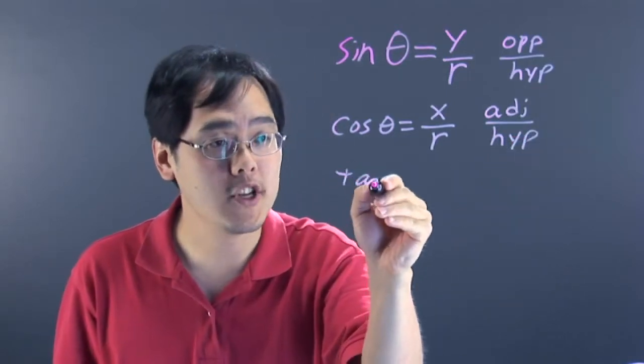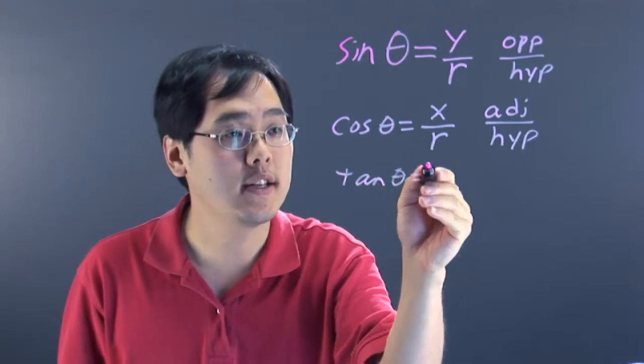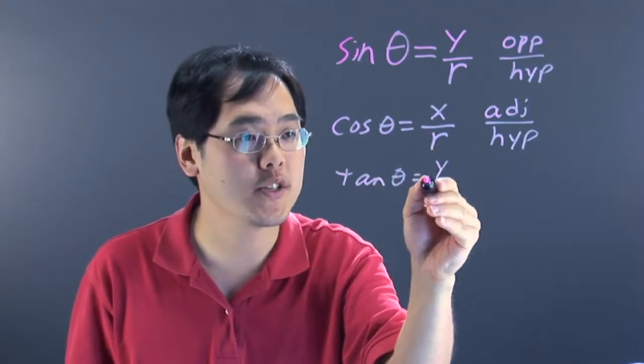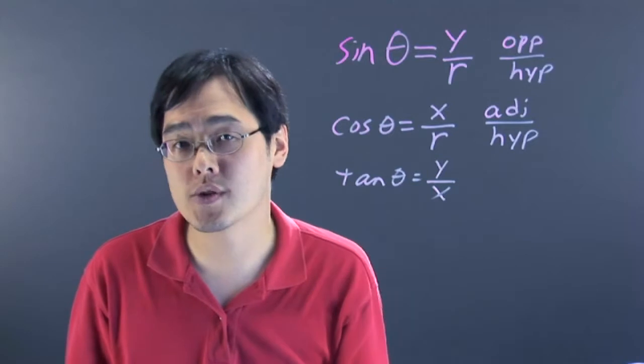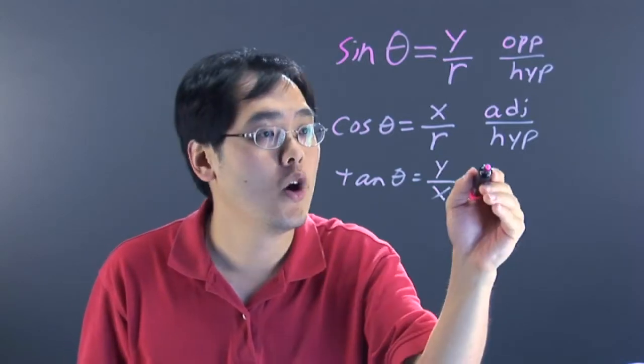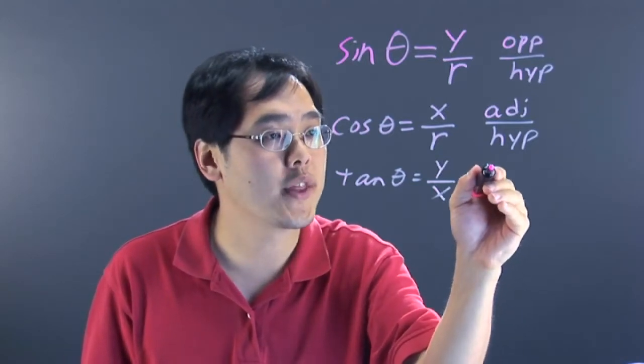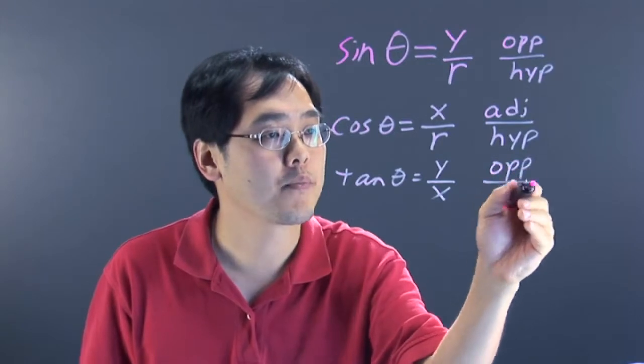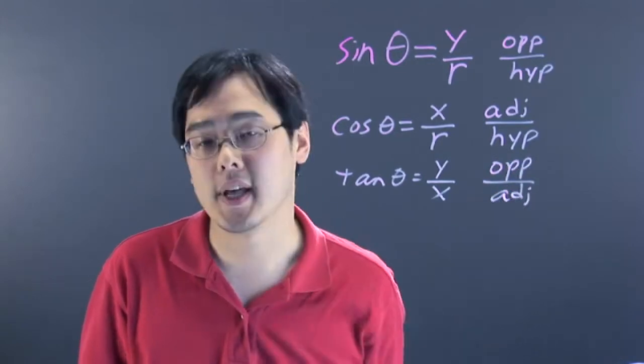Now, the third definition is tangent, and if you're working in circles, you can think of tangent as y over x, or sine over cosine as some people like to call it, or if you're working in right triangles, you can think of this as the opposite leg over the adjacent leg.